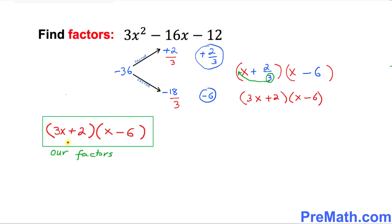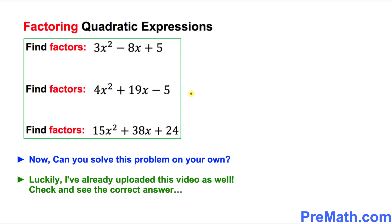So our factors turned out to be 3x plus 2 times x minus 6, and that is our answer. Here is your assignment — can you do it on your own? Take your time. I have already uploaded the solution video as well, so please go ahead and check it out to see the correct answer. Thanks for watching and please don't forget to subscribe to my channel for more exciting videos.